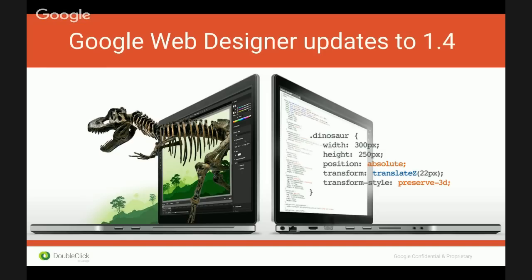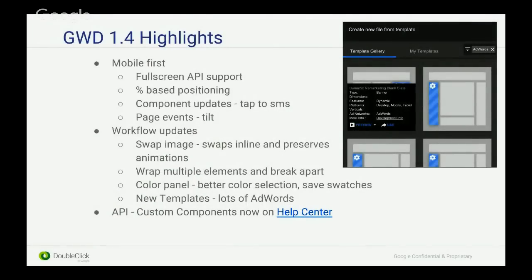So industry updates. Google Web Designer has been updated to version 1.4. There's been a lot of engineering work behind this. We've had a big push for mobile — full screen API support, percent-based positioning, component updates like tap to SMS. Components, for those of you who don't know, is a nice drag-and-drop feature where you can get a chunk of code that does various different functionality. We're trying to make it as easy as possible to add all the things you might have been able to do in Flash, but add it in HTML5 in a user-friendly way. Page events like Tilt, where you can actually use the functionality of a phone to interact with your ads. And workflow updates — GWD is a newer tool and we've really been working hard to make it fluid and seamless.